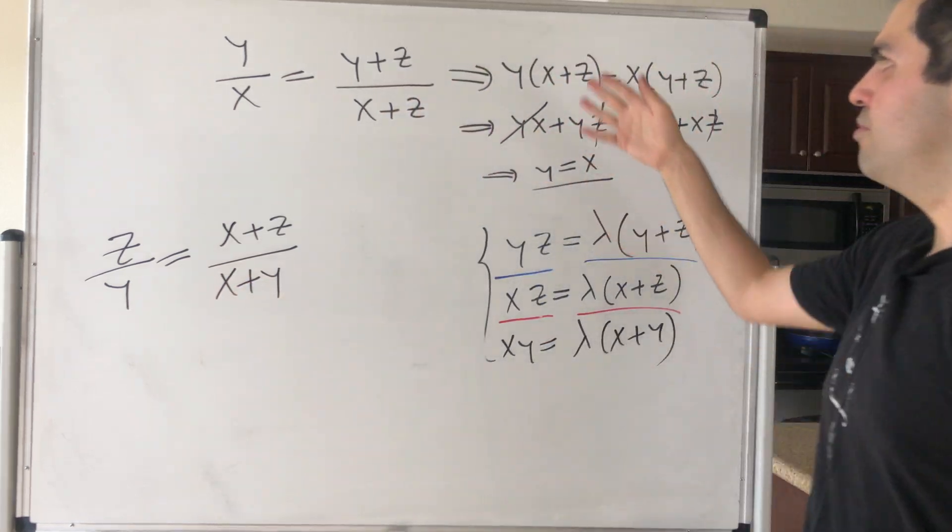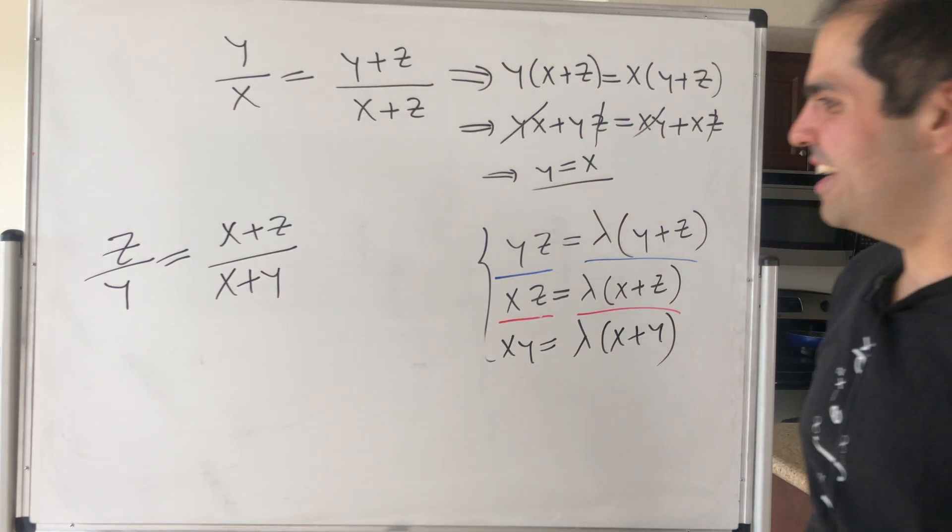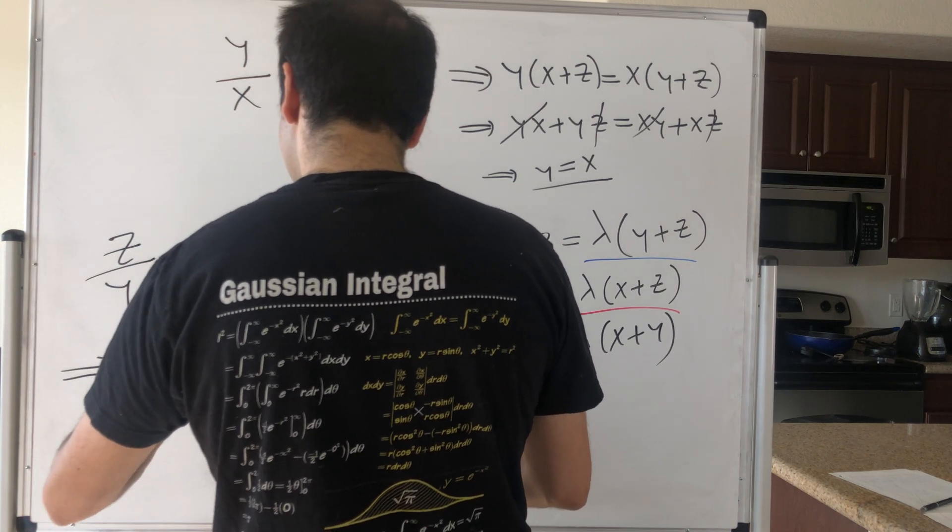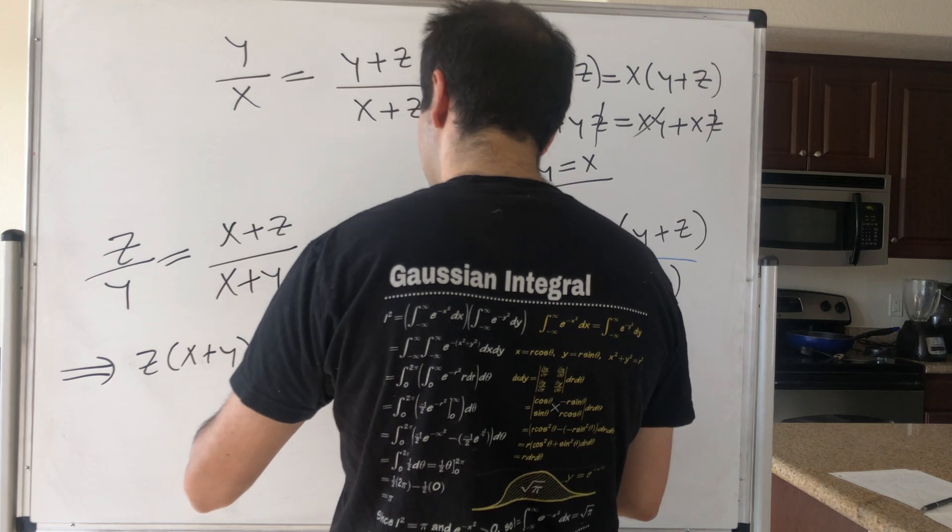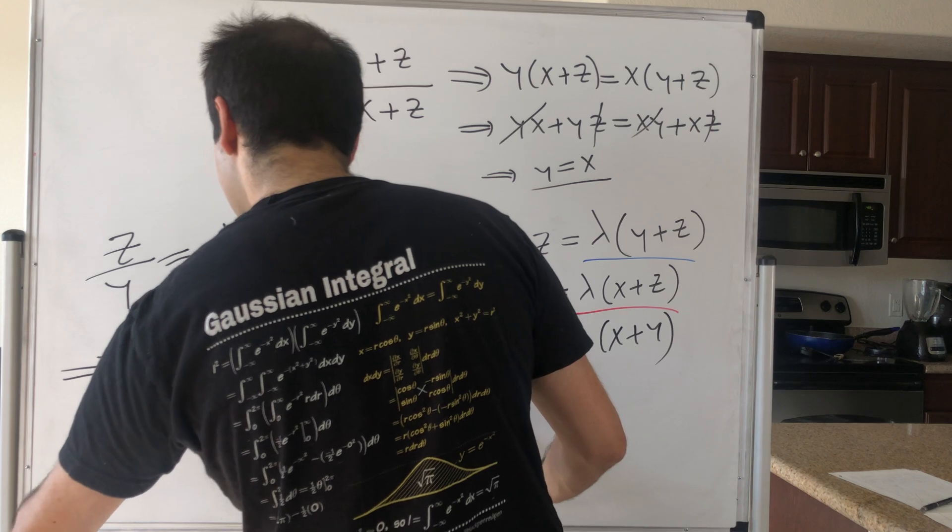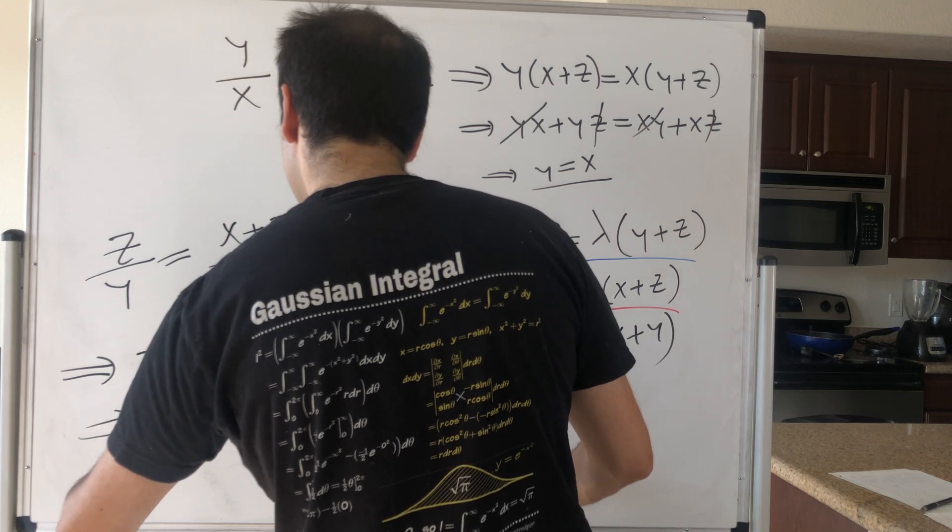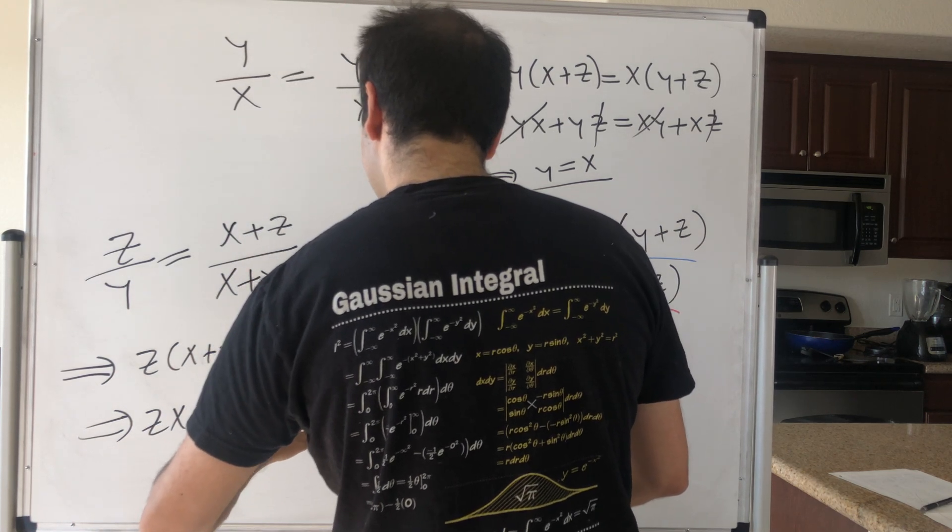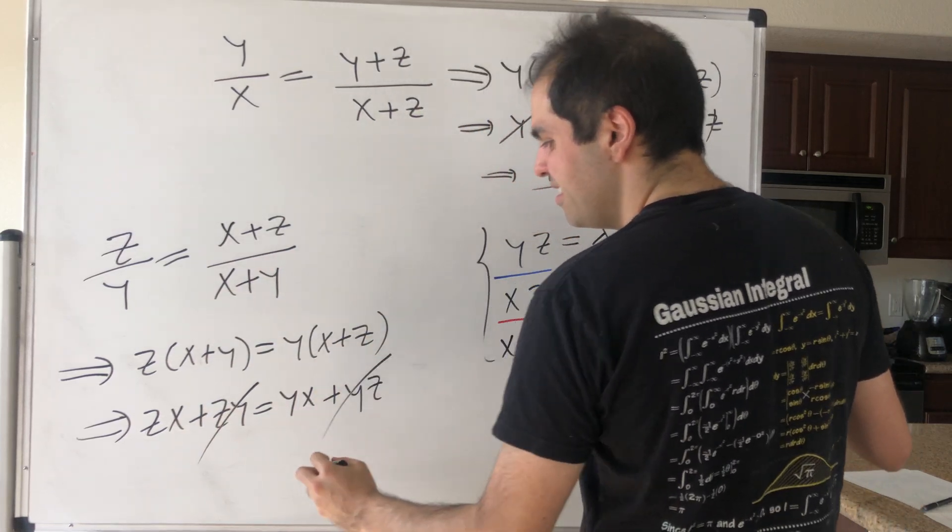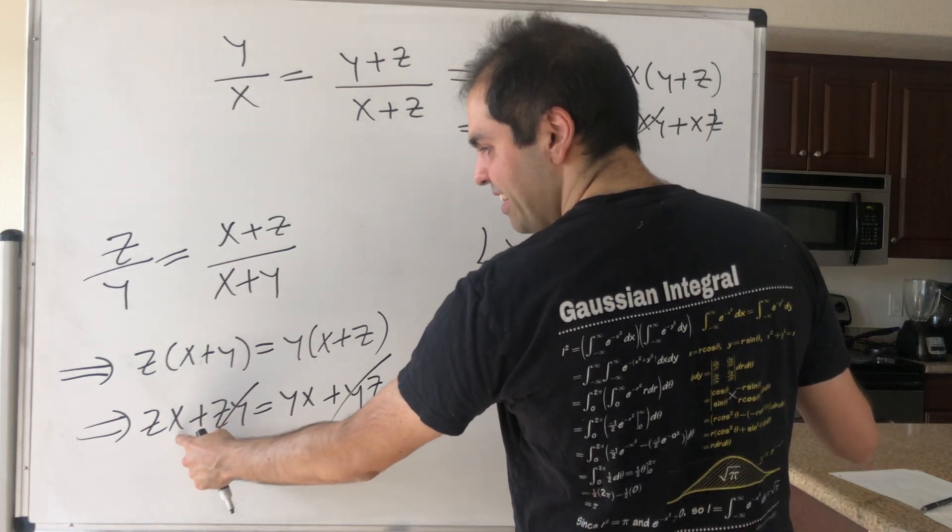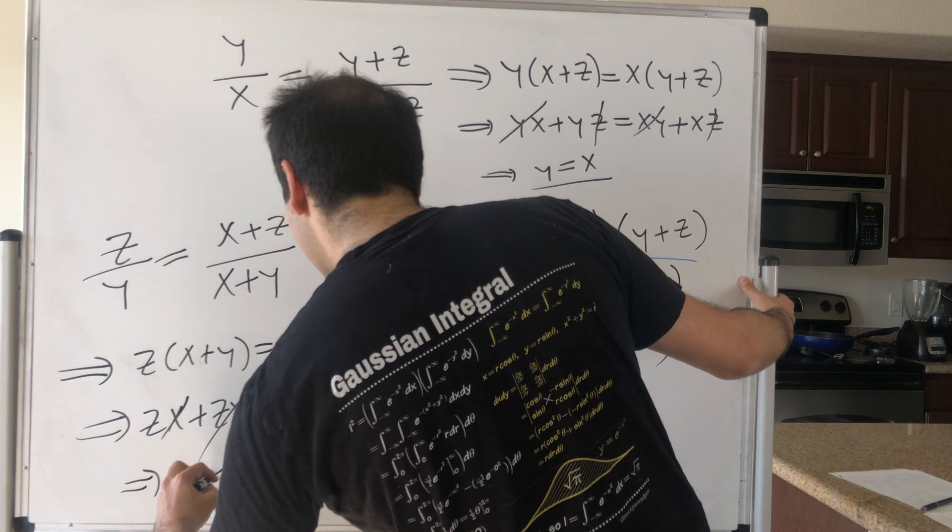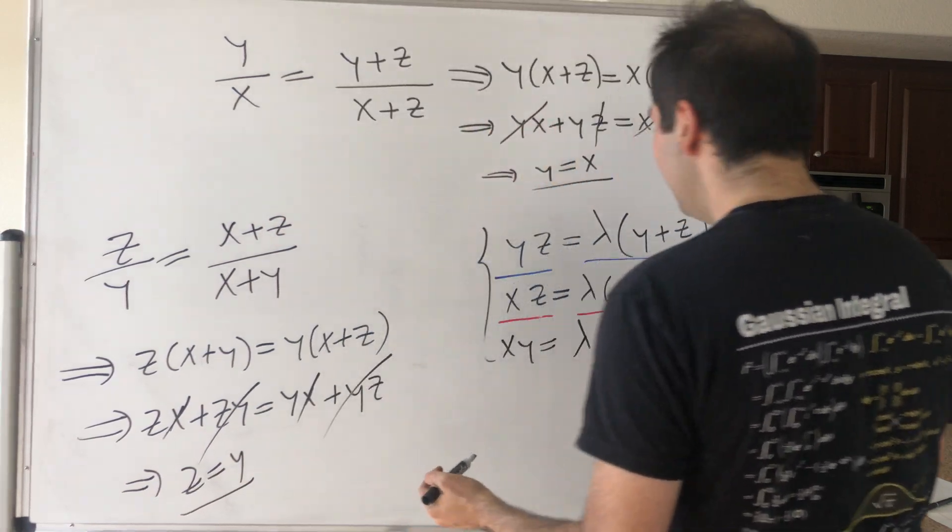Then do the usual cross multiplication trick. Essentially z times (x plus y) equals y times (x plus z). Then zx plus zy equals yx plus yz. And again, same thing as before: the zy's cancel out, and then x is in common, so the x cancels out and we get z equals y.